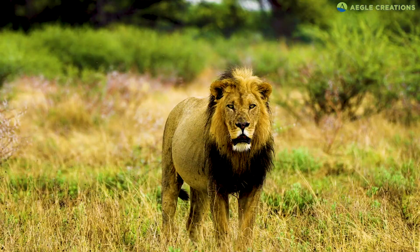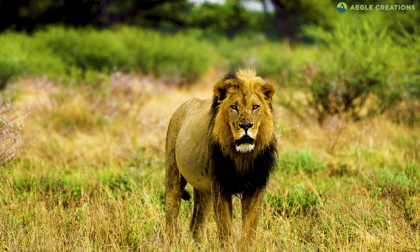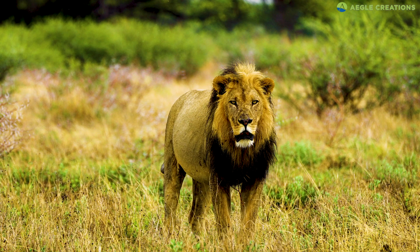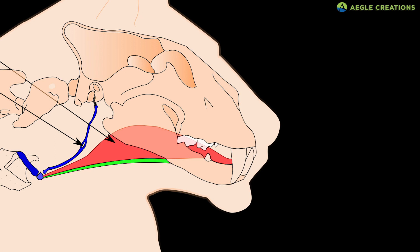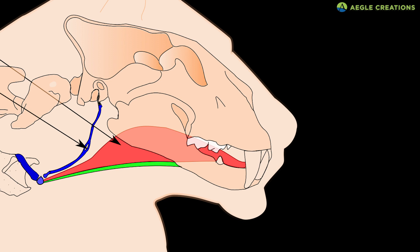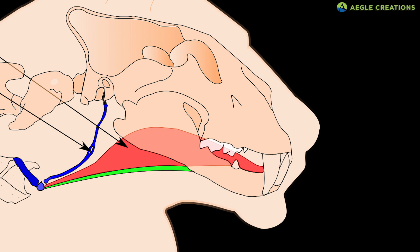Cats are mostly solitary, and they use various methods to communicate. Large cats are known for their ability to roar. In fact, the ability to roar is the difference between big cats and small cats. Big cats, such as lions, have a non-ossified hyoid bone in the larynx that enables them to roar. Small cats don't have this luxury.